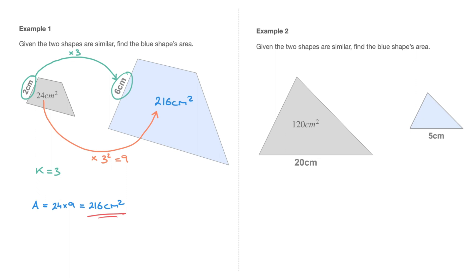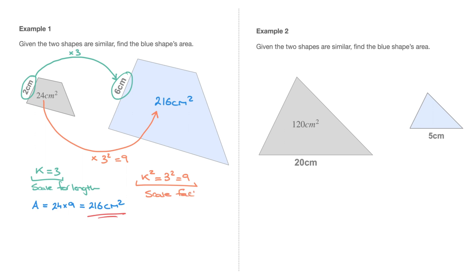Do be careful though. A common mistake is to find the scale factor for length — the 3 — and multiply the area 24 by 3 as well, giving you 72. But that would be a mistake. Remember: if the scale factor for length is k, then the scale factor for area is k squared, which in this case was 3 squared, equaling 9.